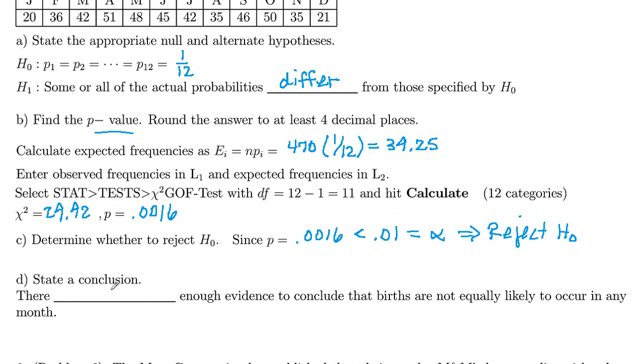So our conclusion is that there is enough evidence to conclude that the births are not equally likely. So at least two of the probabilities differ from each other. They're not all 1/12.